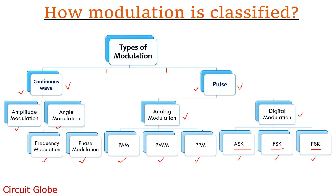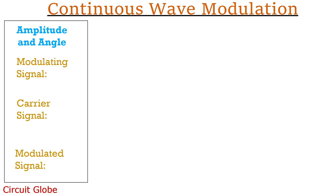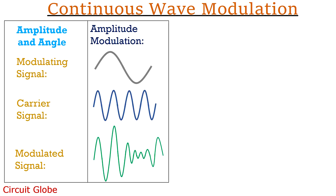In this video lecture, we will discuss each modulation type in brief. Let's first see what is continuous wave modulation, starting with amplitude modulation. This is our modulating signal, this is our carrier signal, and this is our amplitude modulated signal. Amplitude modulation is defined as the type of modulation in which the amplitude of the carrier signal is varied according to the amplitude of the modulating signal or message signal. The carrier signal is superimposed on the message signal, and the carrier signal amplitude varies with the amplitude of the modulating signal, keeping the frequency and phase of the signal constant. In this way, the amplitude modulated signal is achieved.